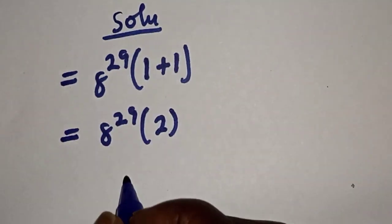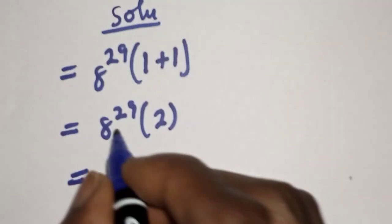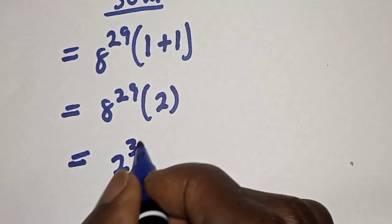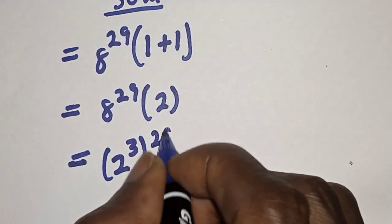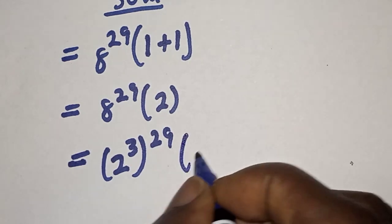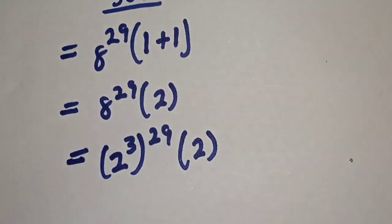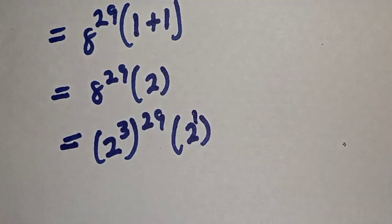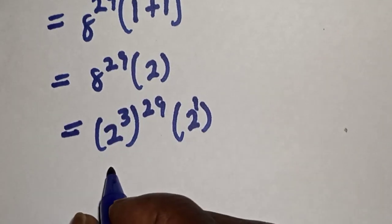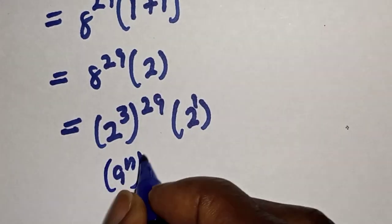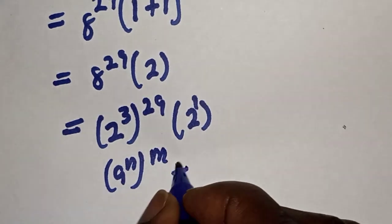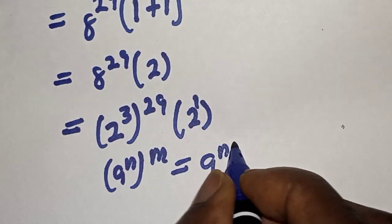This is equal to 8 raised to power 29, which can be written as 2 raised to power 3 to the power of 29, multiplied by 2 raised to power 1. Take note of this rule: if you have a raised to power n to the power of m, this is equal to a raised to power n times m.